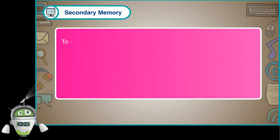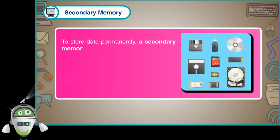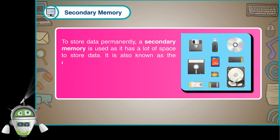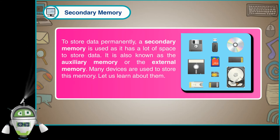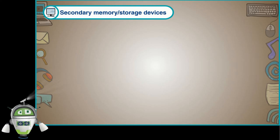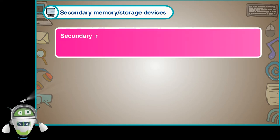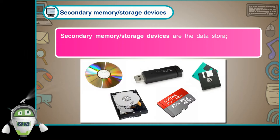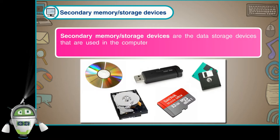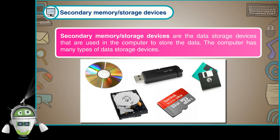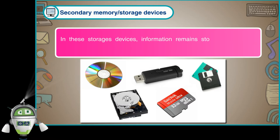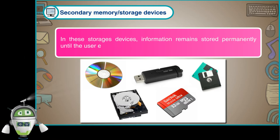Secondary memory is used to store data permanently. It has a lot of space to store data and is also known as auxiliary memory or external memory. Secondary memory or storage devices are used in the computer to store data permanently, and the information remains stored until the user erases it.